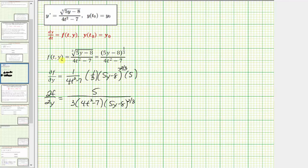Now let's go back to f(t, y) and find any restrictions on t or y. Looking at the numerator, because the index is odd, there are no restrictions on the quantity (5y − 8) — it can be negative, zero, or positive. If the index were even, the radicand couldn't be negative, but because the index is odd, there are no restrictions. Looking at the denominator, we can't have division by zero, which means (4t² − 7) can't equal zero. So we solve for t to find the restrictions where f(t, y) would not be continuous.